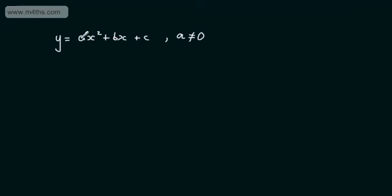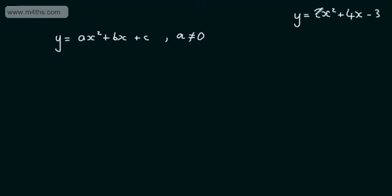A constant means a fixed value. So an example of a quadratic equation might be y = 2x² + 4x - 3. So now a, b and c are 2, 4 and -3. These values are not going to change. x is what we call our independent variable, and y is the dependent variable.